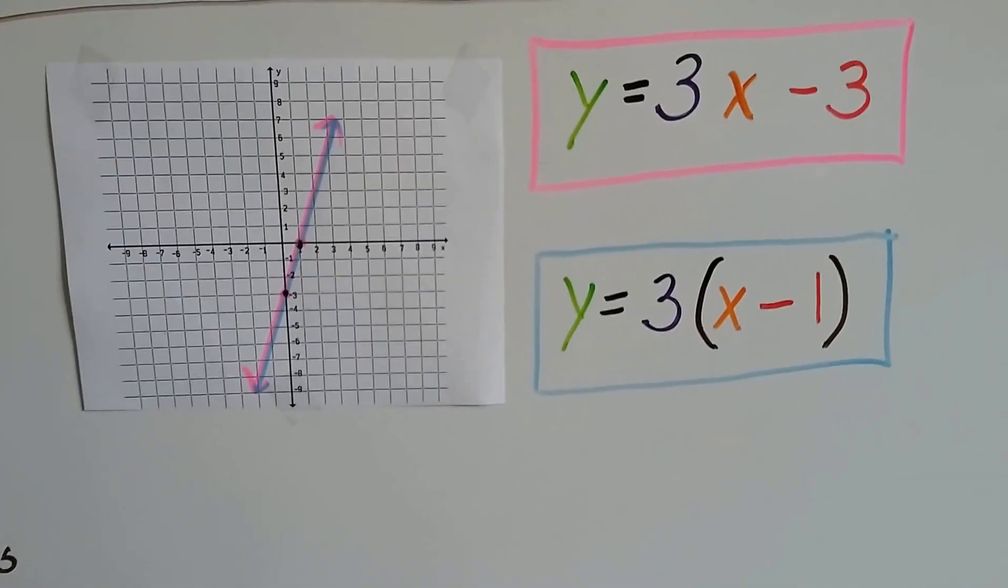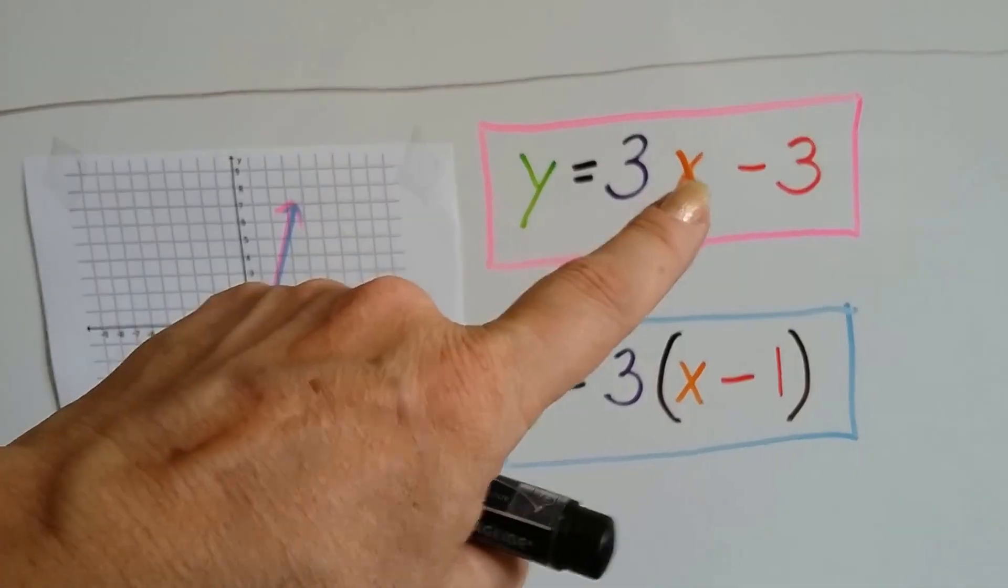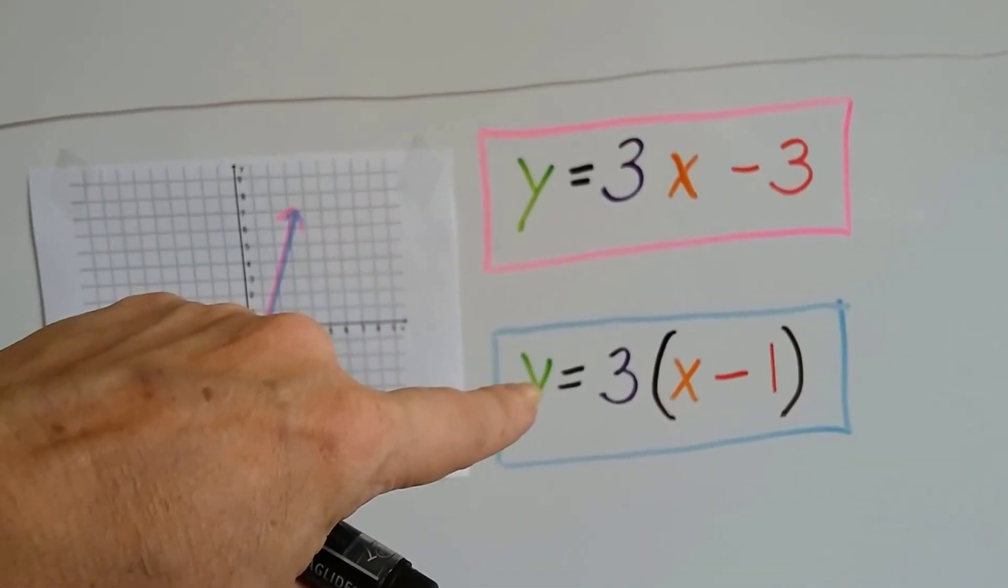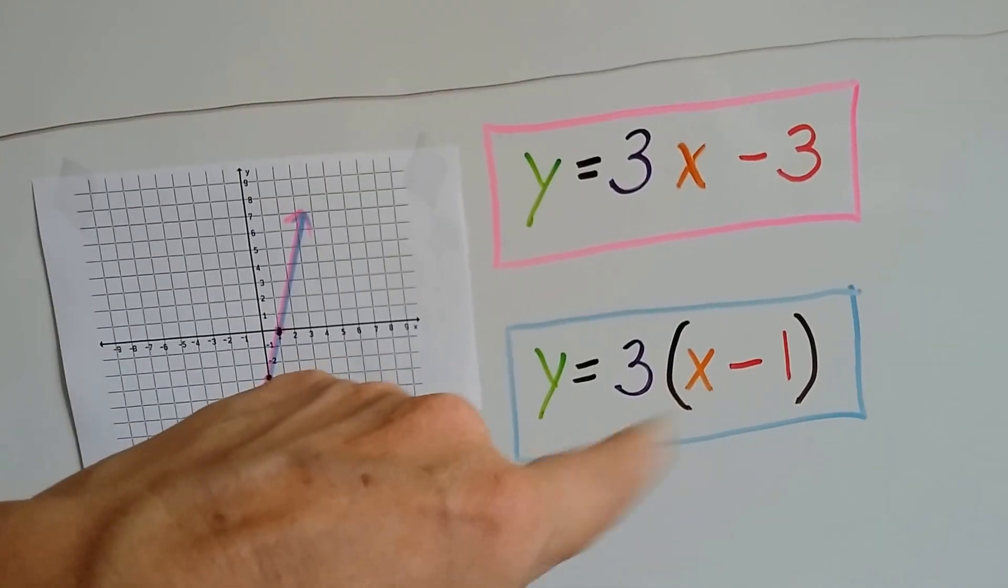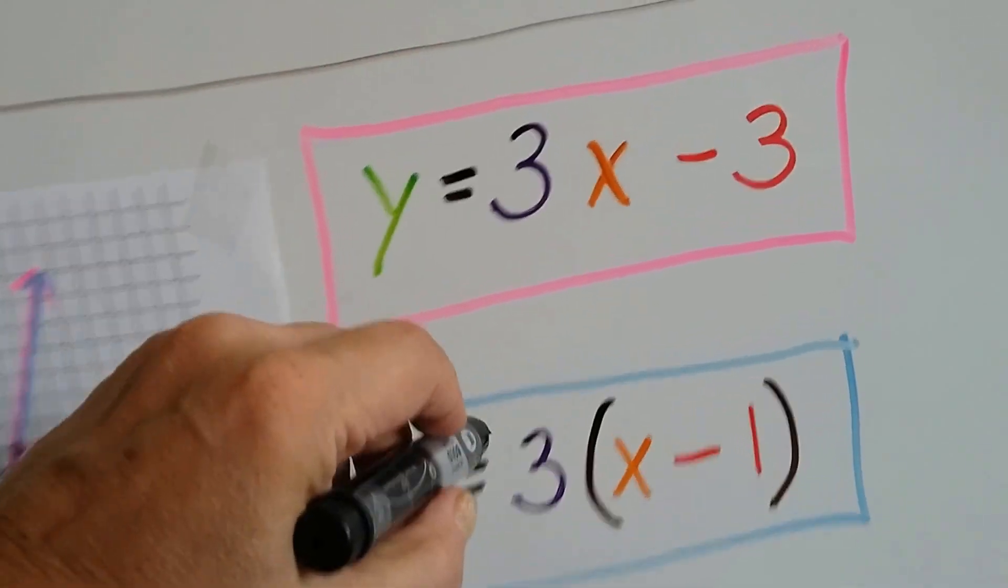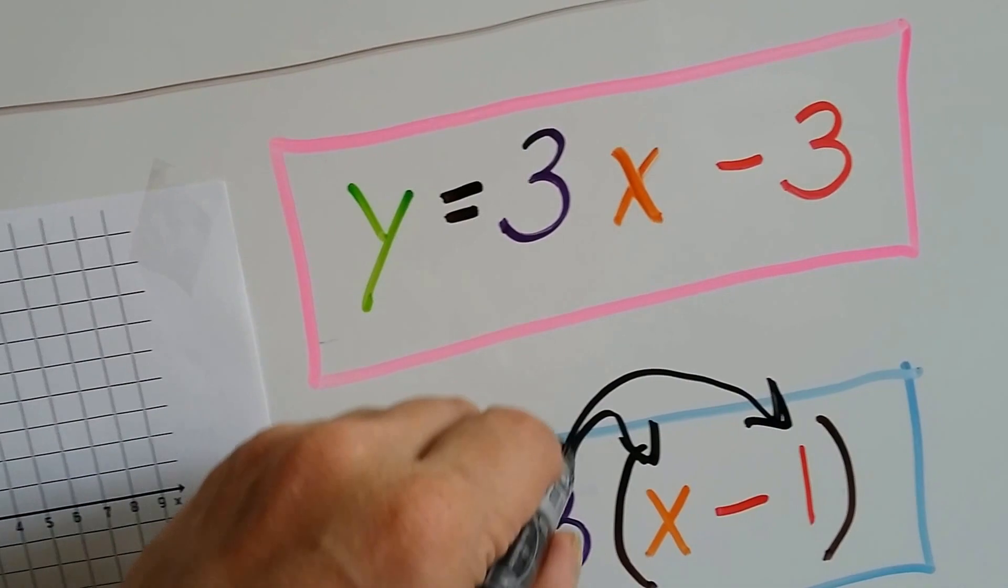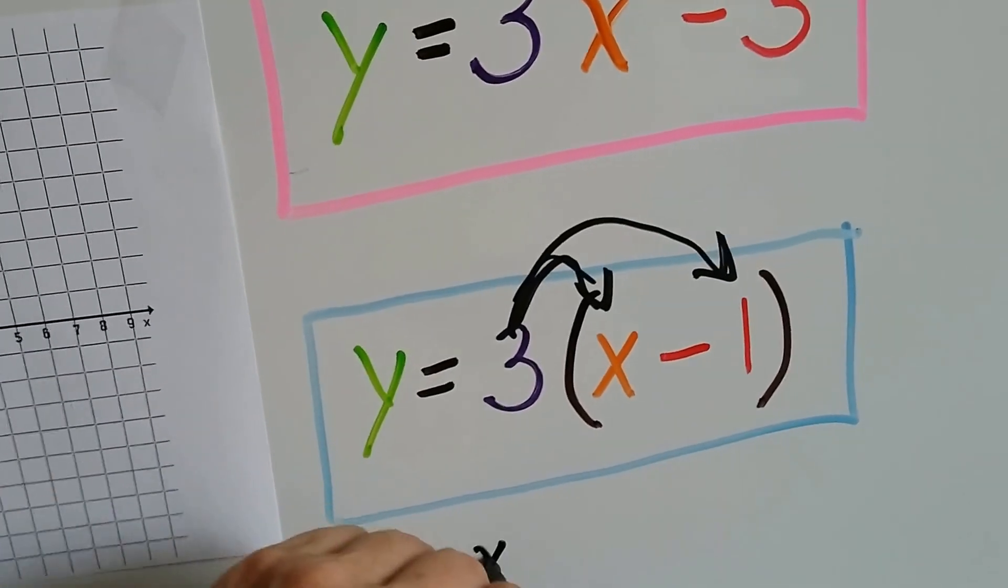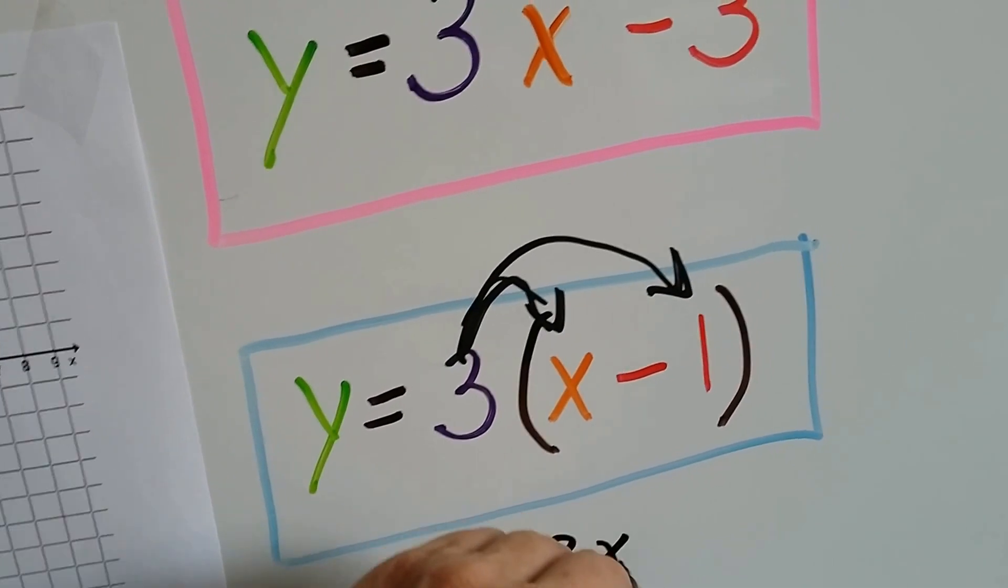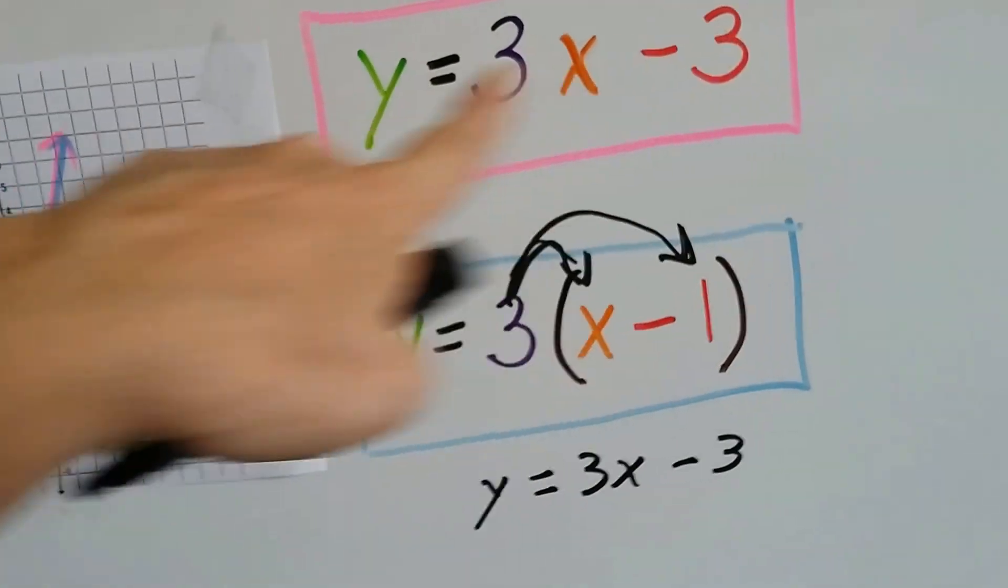Now let's take a look at these. I'm going to throw another curve ball at you. Here's our equations. We've got Y equals 3X minus 3, and our second equation is Y equals 3 times X minus 1 in parentheses. Well, we need to do distributive property, don't we? We need to do that right away before we do anything. What does that give us for our blue line? It gives us Y equals 3X minus 3. Look at that, it's the same as that one.